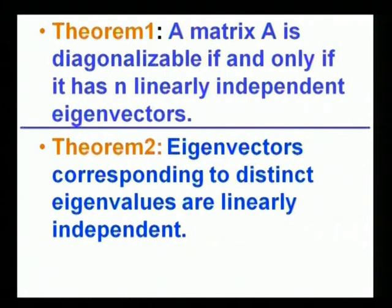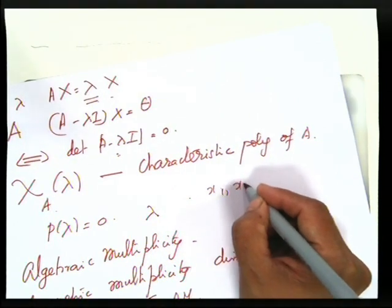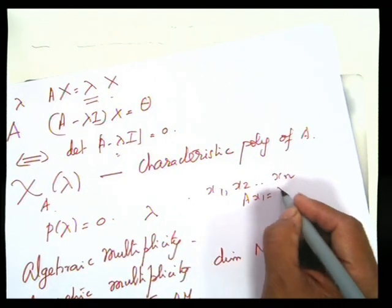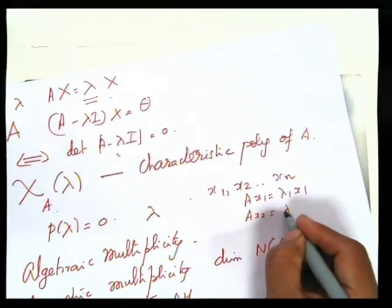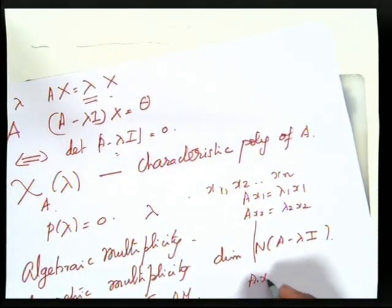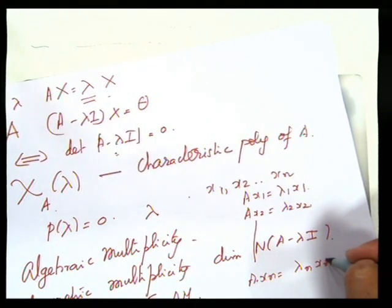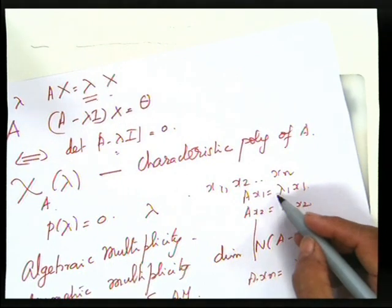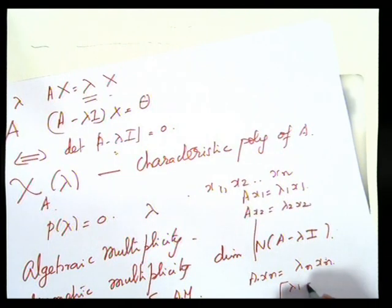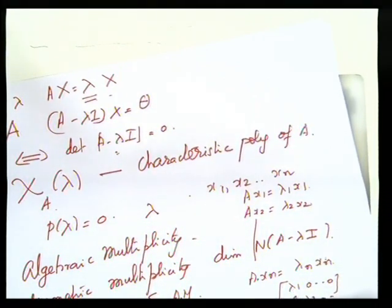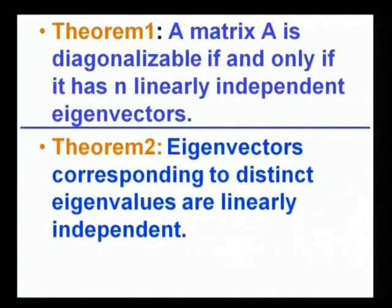Two key theorems play a vital role in the diagonalizability of matrices. First: a matrix A is diagonalizable if and only if it has n linearly independent eigenvectors x1, x2, …, xn. If Ax1 = lambda1·x1, Ax2 = lambda2·x2, …, Axn = lambdan·xn, and since x1, …, xn are linearly independent they form a basis for ℝⁿ, the matrix of A with respect to that basis is the diagonal matrix diag(lambda1, lambda2, …, lambdan). Therefore the matrix is diagonalizable.